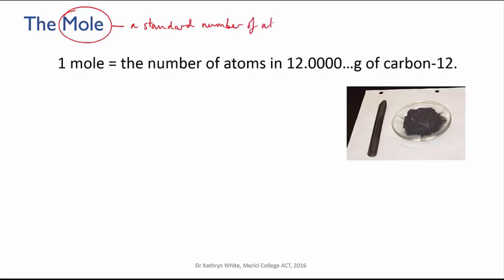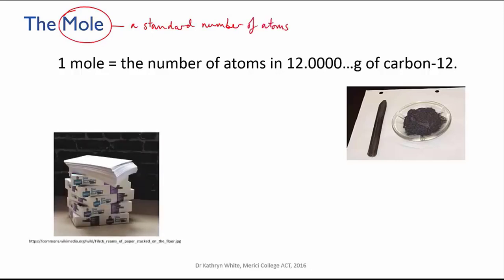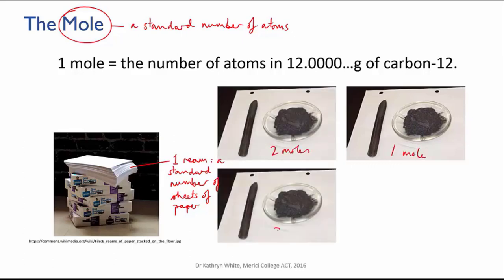Think back to reams of paper. It's like saying, well, however many pieces of paper are in one packet, that will be our standard number of pieces of paper. And it turns out to be 500 and we're going to call 500 a ream. So a mole is a really large number of atoms and we can skip count atoms by counting one mole of atoms, two moles of atoms, and so on.